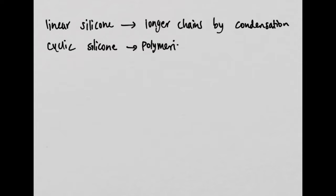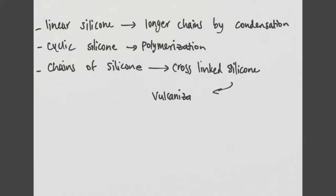Since Rochow-Müller only results in short linear molecules and cyclic molecules of silicone, these linear silicone molecules are then developed into longer chains by condensation, and the cyclic molecules are grown into long chains by polymerization. These chains of molecules can then be used to make more rigid complexes such as cross-linked silicone via a process of vulcanization at room temperature. But let's not get carried away and stick with the easier molecules.